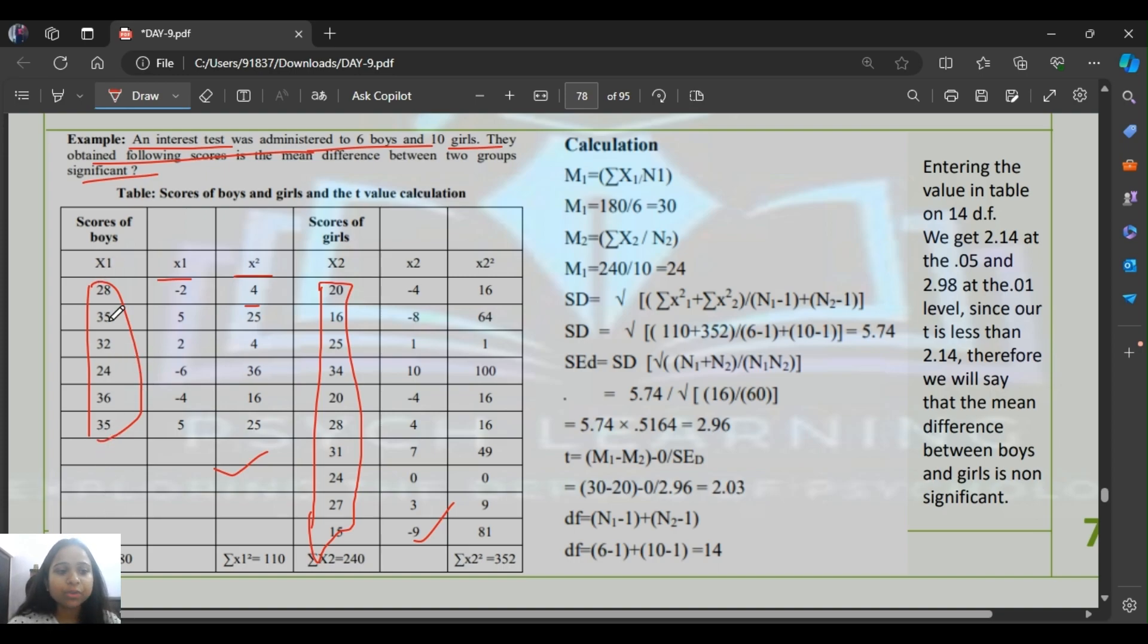You can see here mean 1's formula: sigma x1 by n1. The mean is 30. We have the first population which is boys. The mean is total divided by number of population, which is six. 28 plus 35 plus 32 plus 24 plus 36 plus 35 divided by 6 gives us 30.